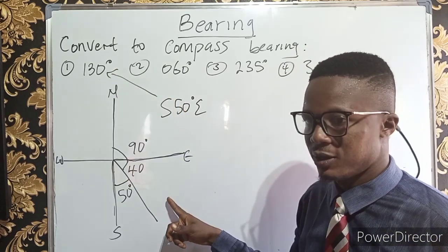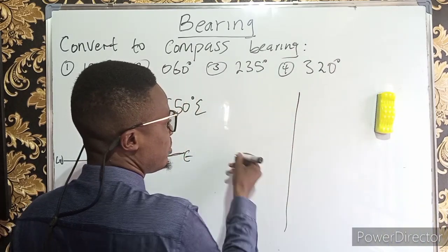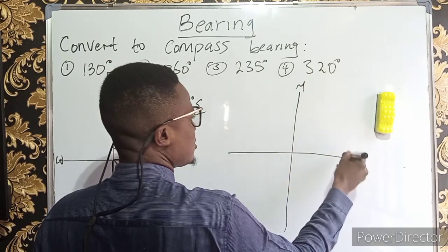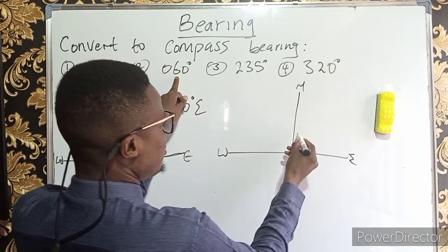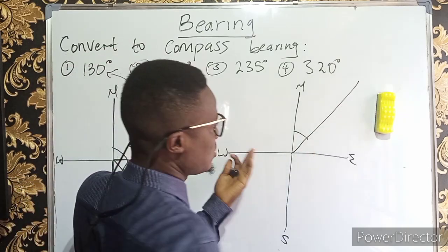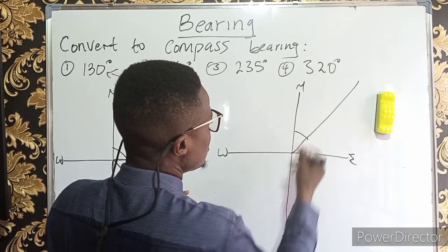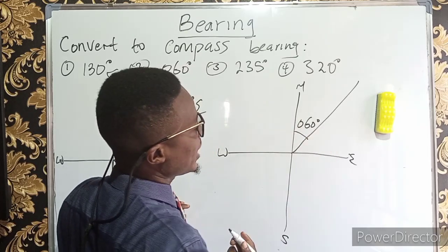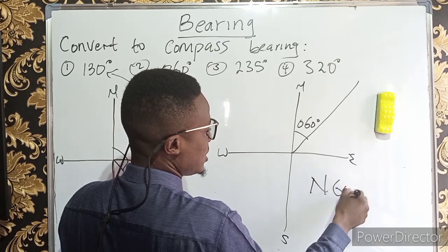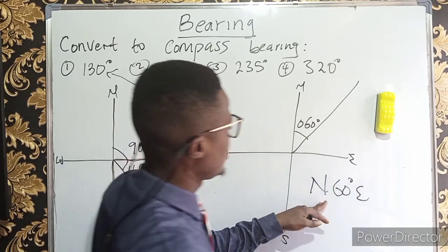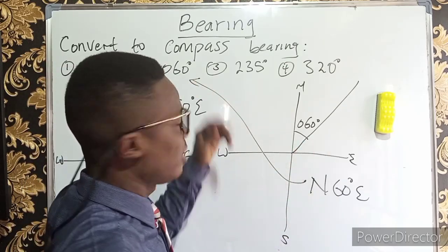For 060 degrees: draw the Cartesian plane with north, east, south, west. 60 degrees must be in the first quadrant because it does not reach 90. It is located between north and east. Since it falls in the first quadrant, the compass bearing has the same value — 60 degrees east of north. Whenever a three-digit bearing falls in the first quadrant, the compass bearing value is the same.